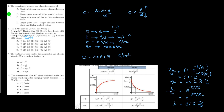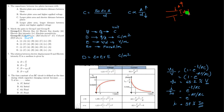Next question: capacitance between the plates increases with which option? Shorter plate area and shorter distance, shorter plate area and higher applied voltage, larger plate area and shorter distance, or larger plate area and longer distance with higher applied voltage? Capacitance depends on A and d — as area increases and distance decreases, capacitance increases. So larger plate area with shorter distance increases capacitance.